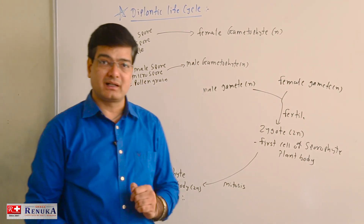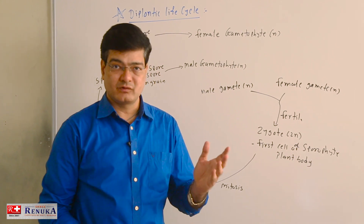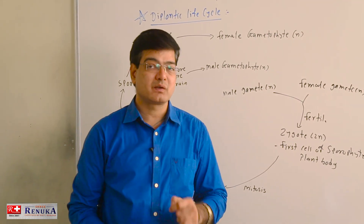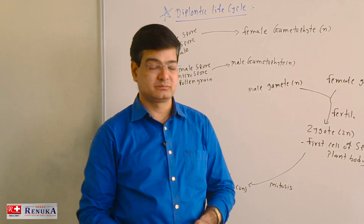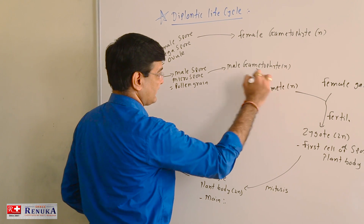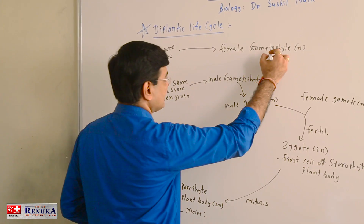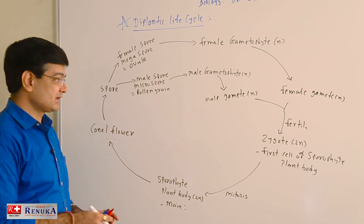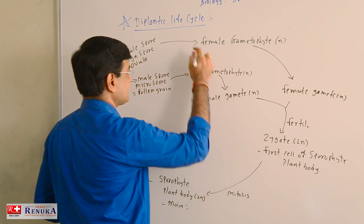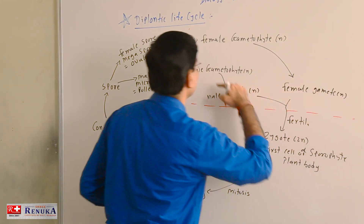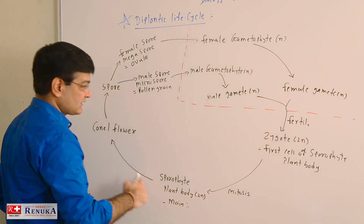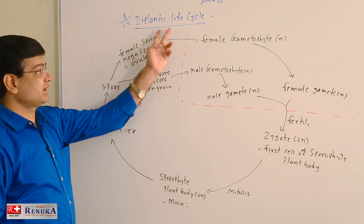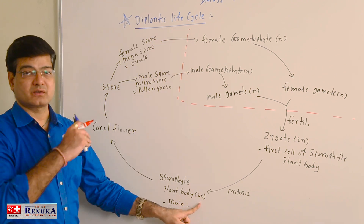That is why we say: the higher the plant, the smaller is the gametophytic stage. In the case of thallophytes like algae, the gametophytic plant body is the main body which carries out photosynthesis. But in higher plants, the plant we observe is in its sporophytic stage. The gametophytic phase produces male and female gametes. The sporophytic stage spans from zygote to spore formation, making this a Diplontic life cycle.